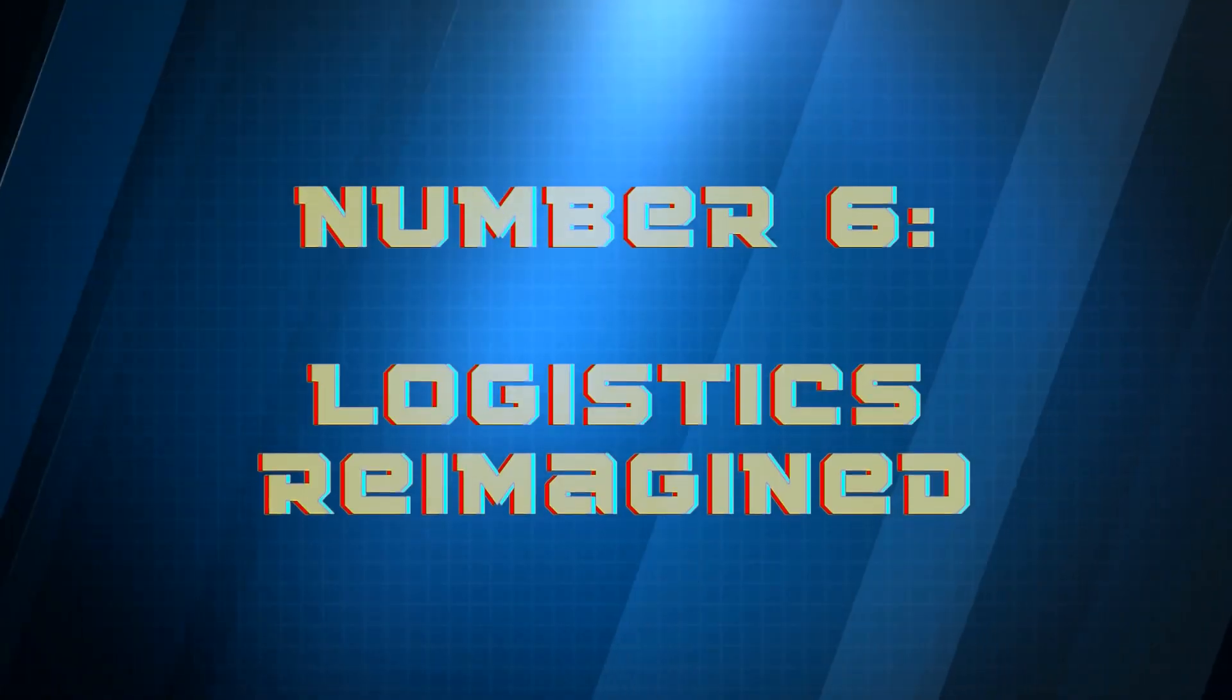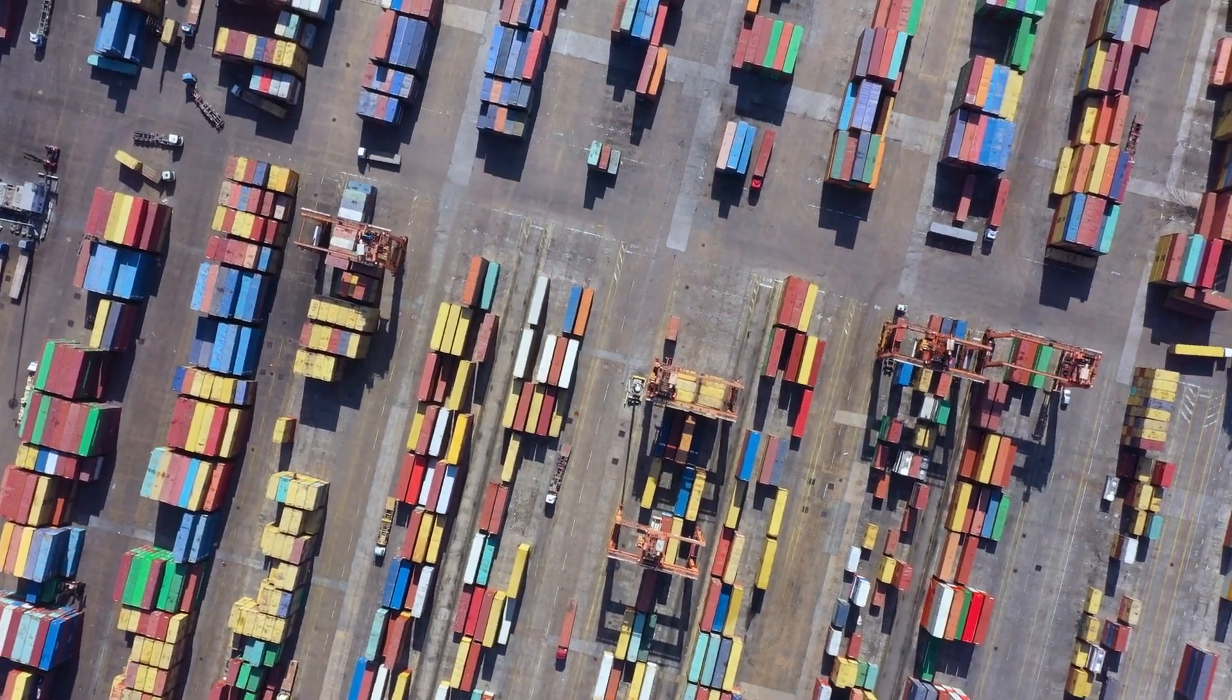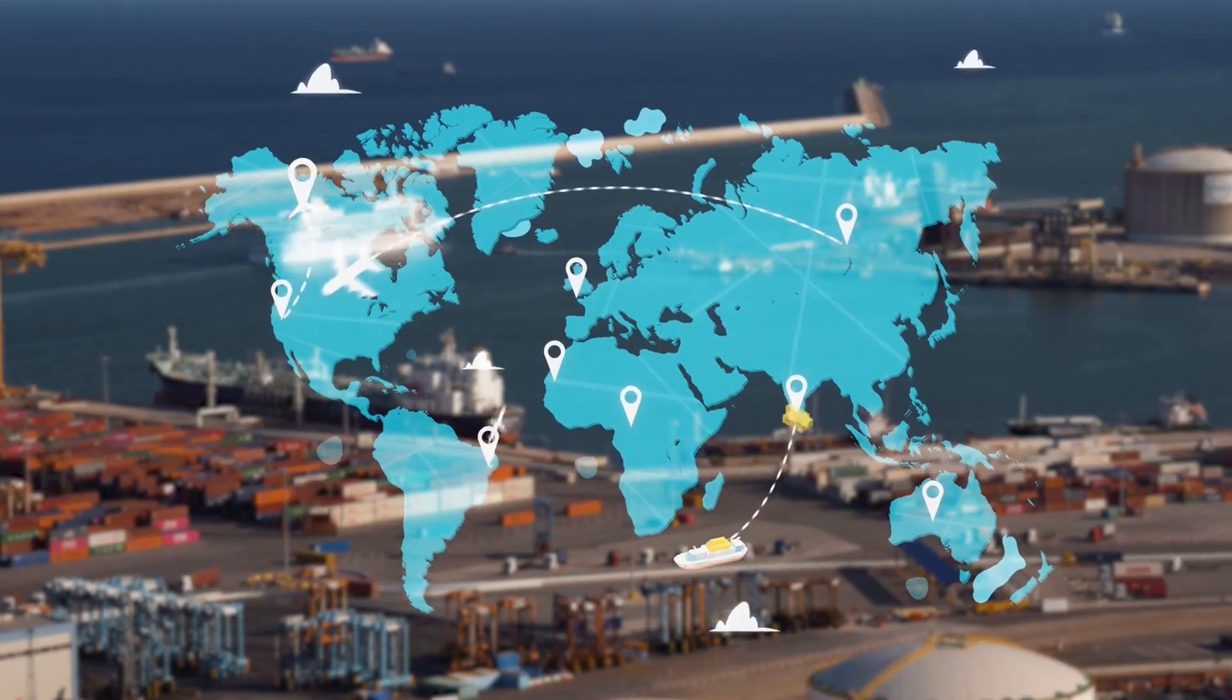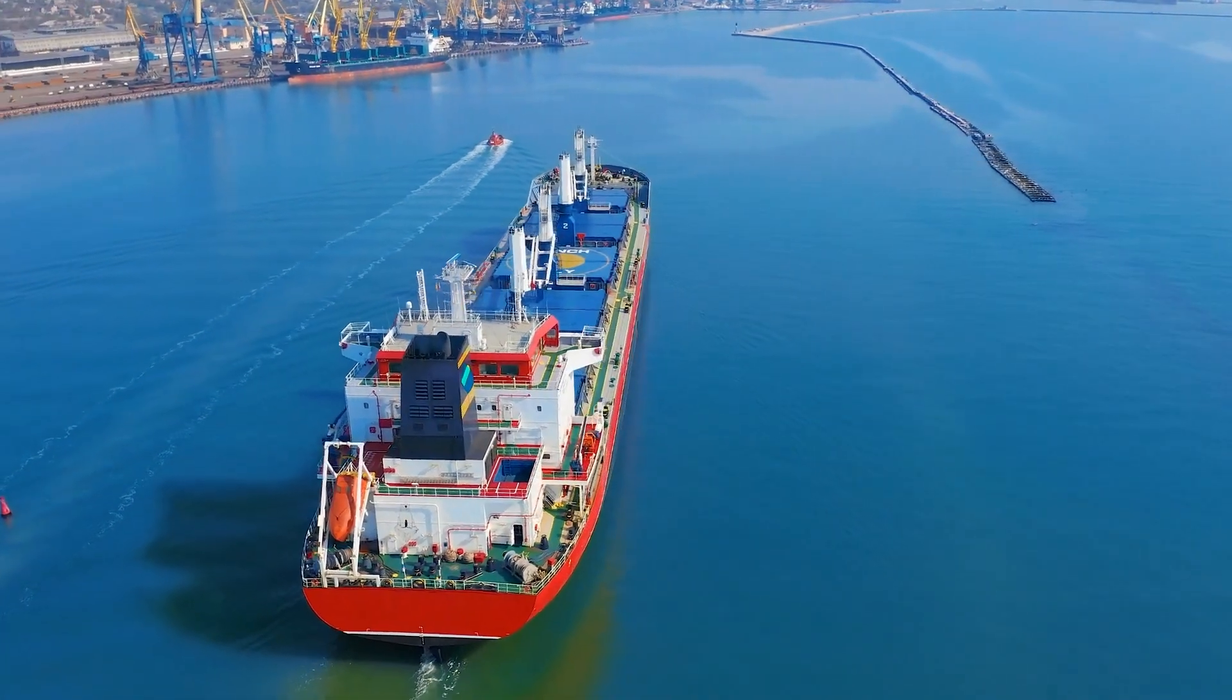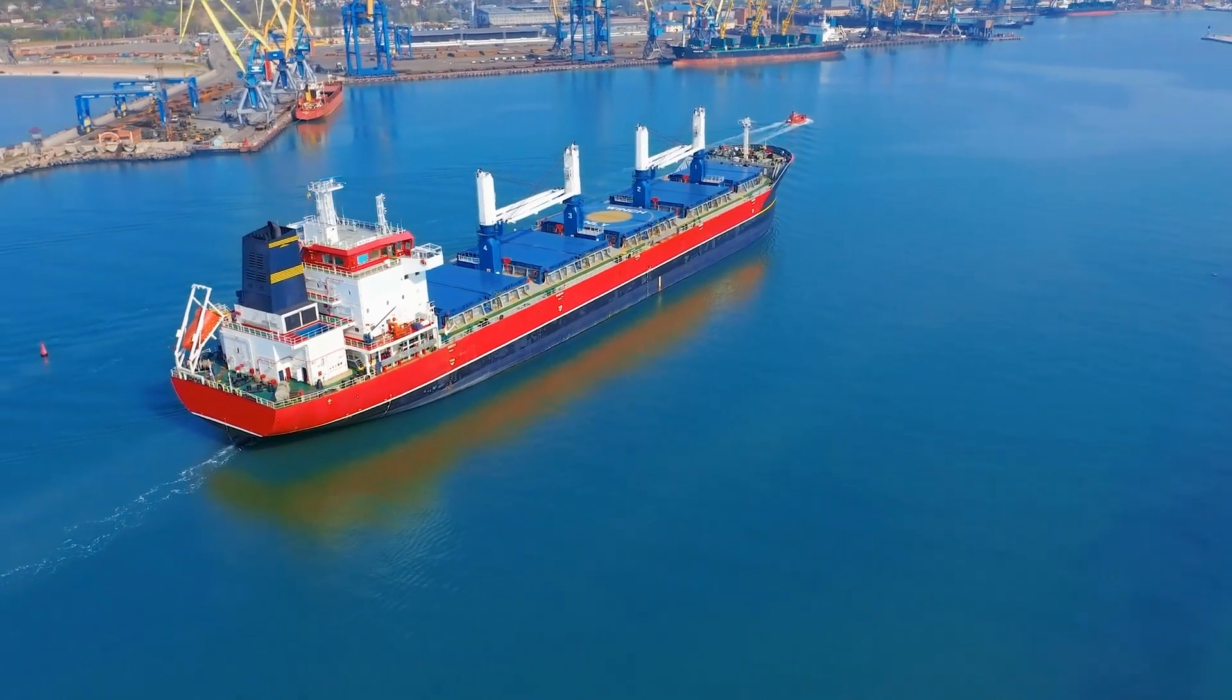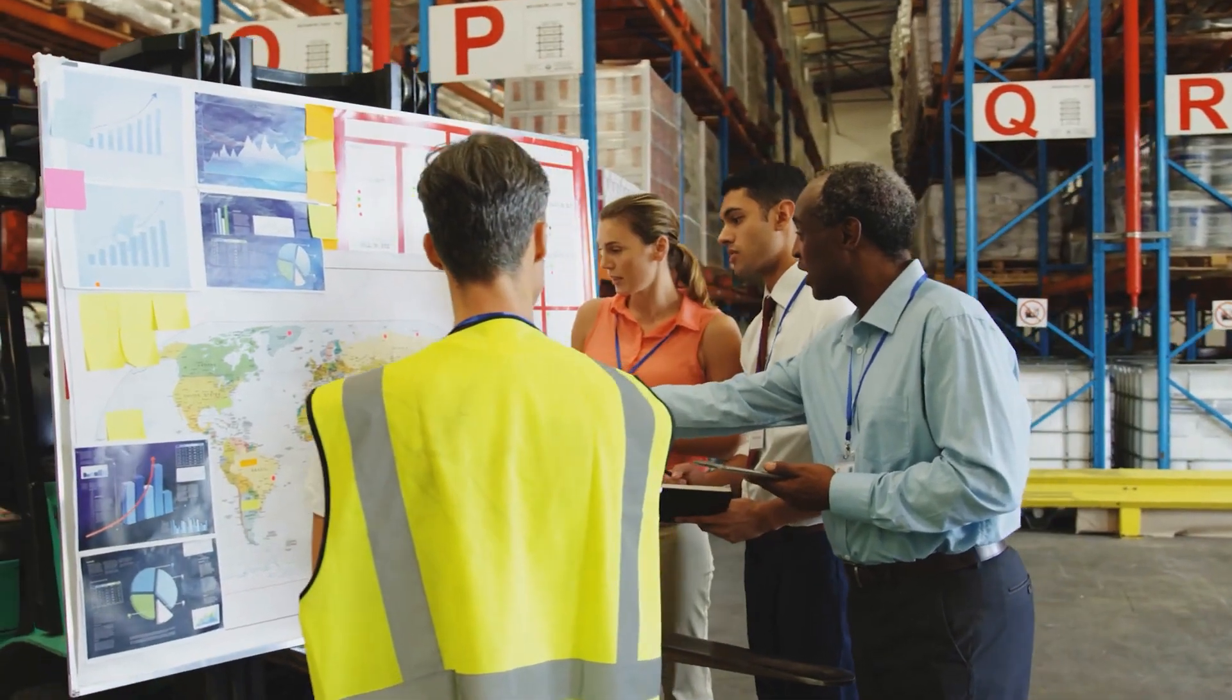Number 6: Logistics reimagined. Quantum computing and artificial intelligence will transform logistics in the sense that complex calculations will be done almost instantly, allowing companies to optimize routes, inventory, and schedules in real time. For example, in shipping, AI-powered quantum computing could determine the most efficient routes for delivery trucks or ships, considering factors like traffic, weather, and fuel consumption in a fraction of the time it takes today. This optimization can reduce costs and delivery times, benefiting both businesses and consumers.